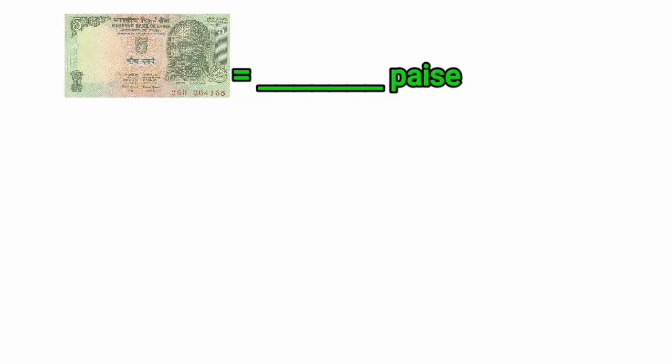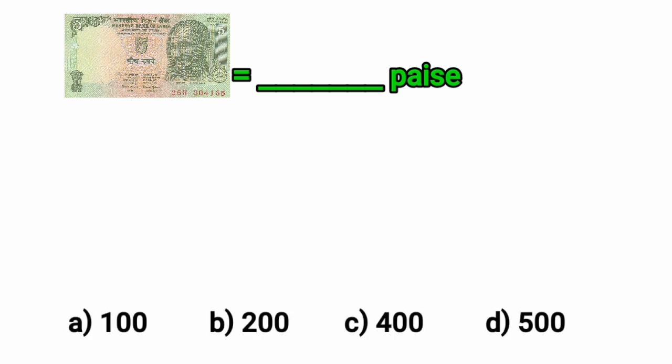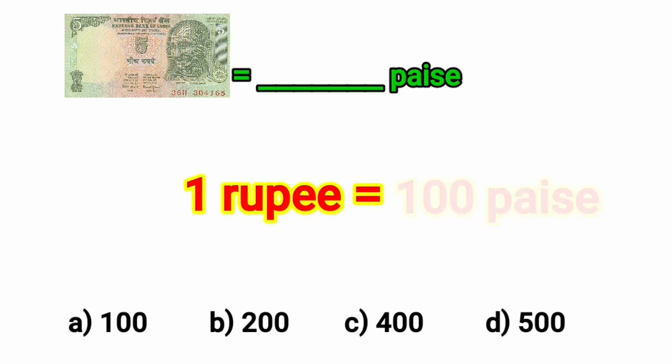5 rupees is equal to how many paise? In 1 rupee there are 100 paise. 1 rupee is equal to 100 paise.